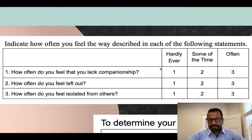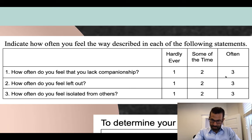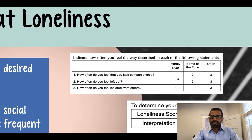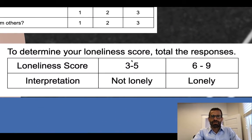How often do you feel left out? Hardly ever, some of the time, or often. How often do you feel isolated from others? Hardly ever, some of the time, or often. For each response, you give yourself a score of one to three depending on how you answer. The total score is your loneliness score. A score of three to five is considered not lonely, while a six to nine would be considered lonely.